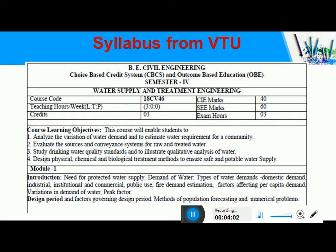In this course, what will be your learning objectives? If you learn this course, you will know what are the variations in the demand of water and how to estimate the water requirement for a community. We need water for various activities — domestic use, industrial use, or water for fire demand. You should know how much water is required for different human users, understand variations in demand, and estimate that water demand accepted by different users.